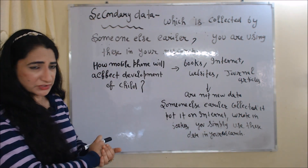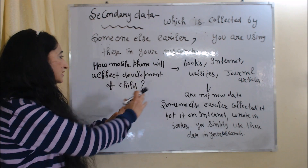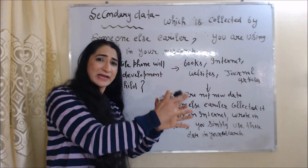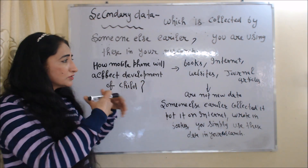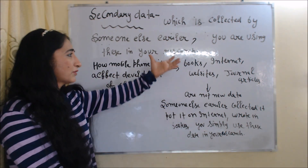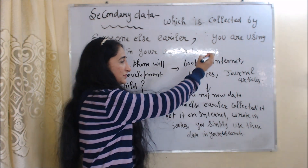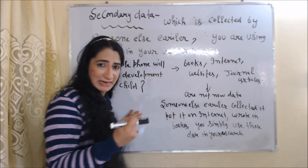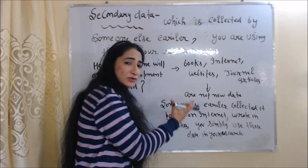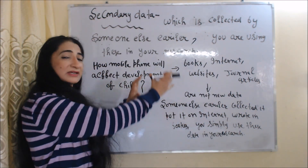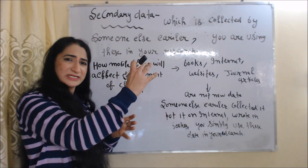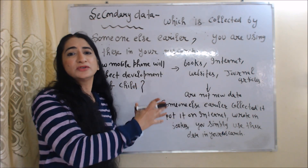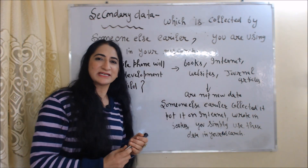For example, you want to get information about how mobile phones affect the development of a child. You will not go to each child or parent for this information. You simply take information from books, from the internet, from websites, and from journal articles. These data are not new — someone else collected them earlier. You simply use this data in your research. So it is called secondary data.